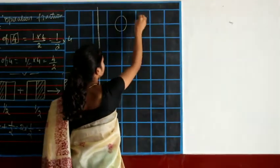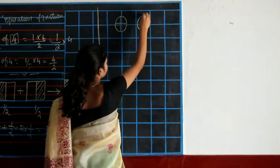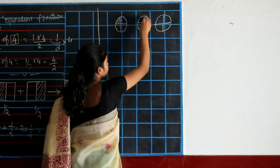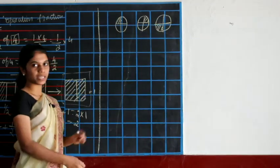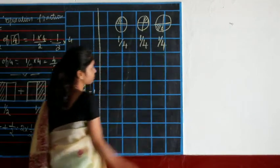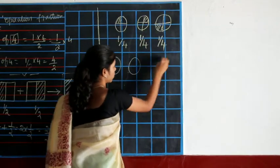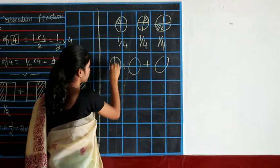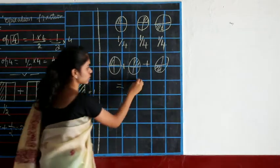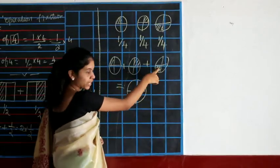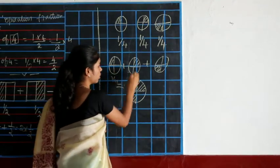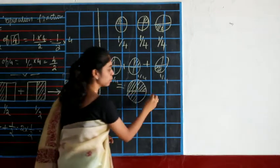Let's see one more example. Here you have 3 circles which are divided into 4 parts. If you see, there is 1 part shaded out of 4 portions in each circle. Likewise here, 1 out of 4; here 1 out of 4; here 1 out of 4. If you combine these 3, you can write 1, 2 and 3 shaded parts — so here 1 by 4, here 1 by 4 and here 1 by 4, which gives you 3 by 4.